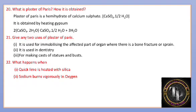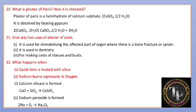What happens when quick lime is heated with silica? Calcium oxide (quick lime) heated with silica, SiO2, gives calcium silicate, CaSiO3. Sodium burns vigorously in oxygen to give sodium peroxide: Na + O2 → Na2O2.